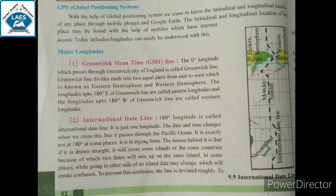GPS — GPS's full form is the Global Positioning System. Remember that with the help of the Global Positioning System, we come to know the latitudinal and longitudinal location of any place through mobile phones and Google Earth. We use mobile phones and Google to find longitude and latitude location. The latitudinal and longitudinal location of any place may be found with the help of a mobile which has internet access.